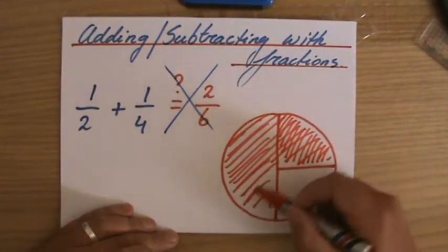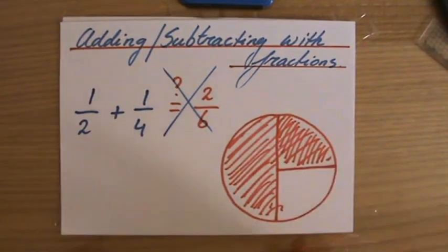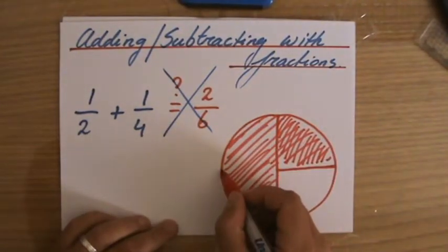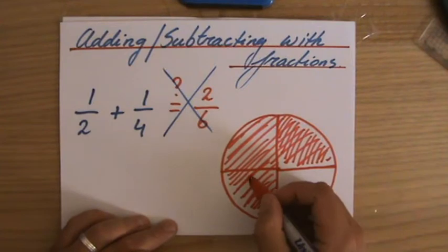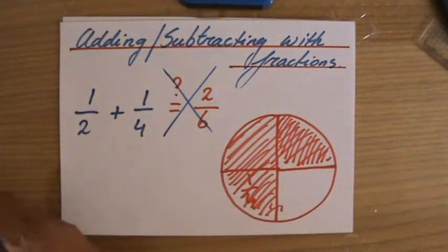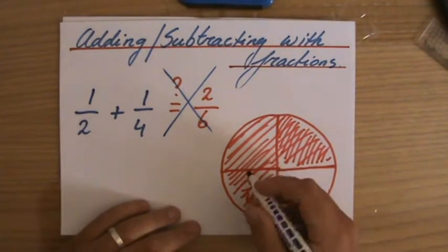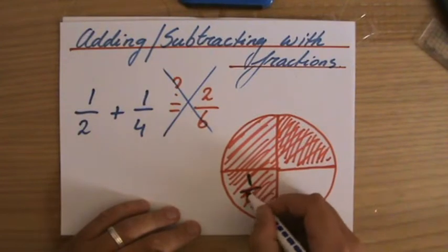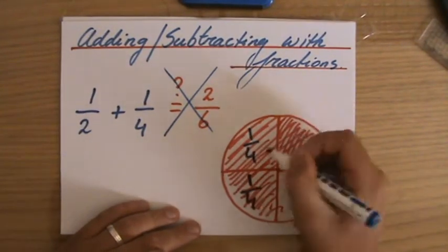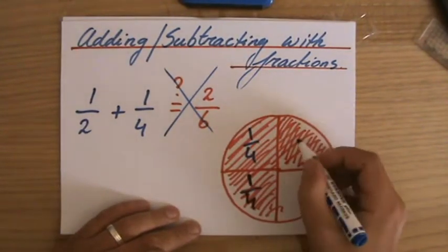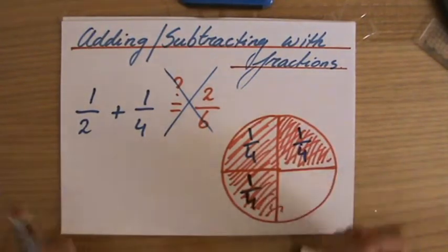How much is a half plus a quarter? Now, as you can perhaps see looking at this circle, that is three quarters. Because the half, I can divide that into quarters as well. So I have a quarter—let's do that in blue—a quarter, and one over four, and that is one over four. And that's my half pizza and another quarter. So I have three quarters.